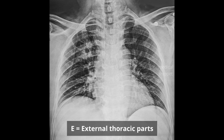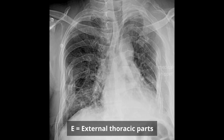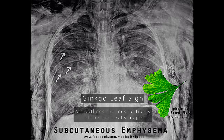Next is E. E stands for external thoracic structures like ribs, clavicle, scapula, or soft tissue. Any clavicular, scapula, or rib fractures has to be noted. One has to trace each rib from posterior to anterior end to look for any rib fractures. Subcutaneous emphysema should also be looked for. It will look as shown in the picture — it is called the Ginkgo leaf sign, as the air outlines the pectoralis major muscle fibers, making it look like a Ginkgo leaf.